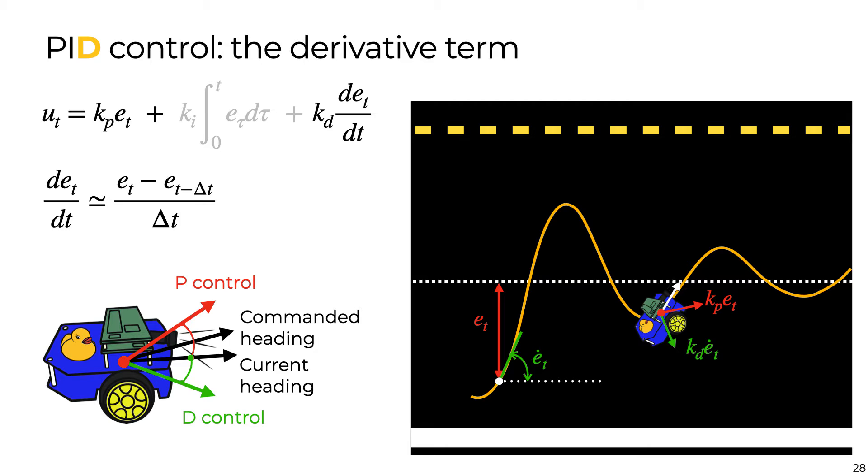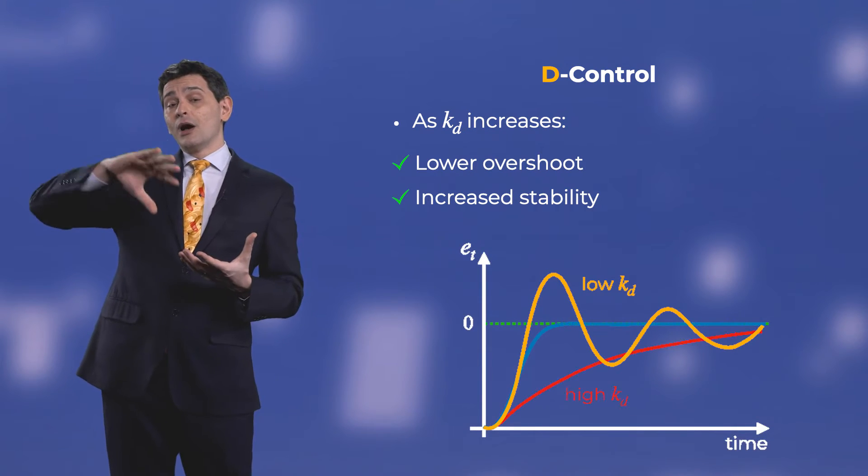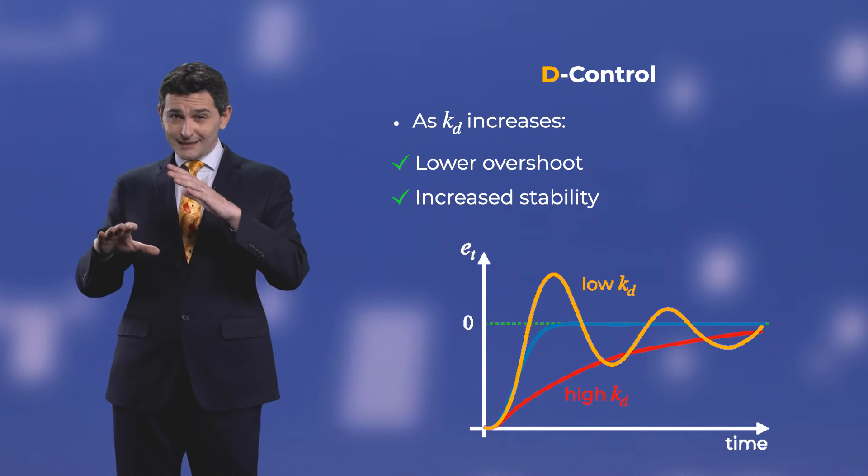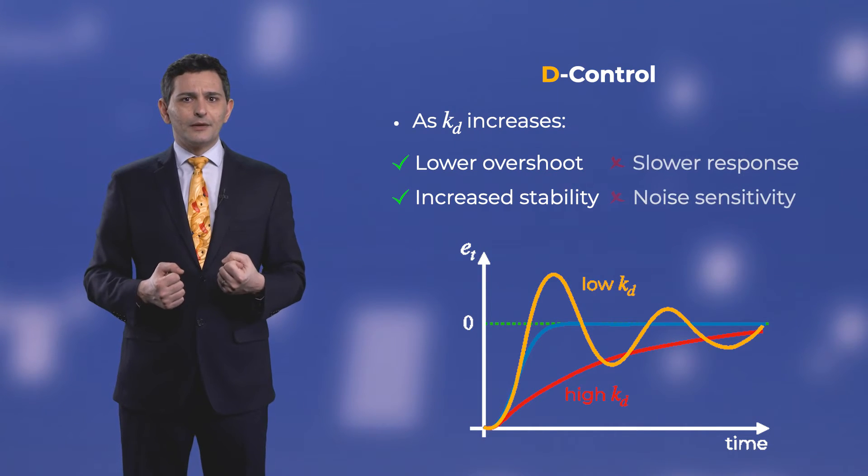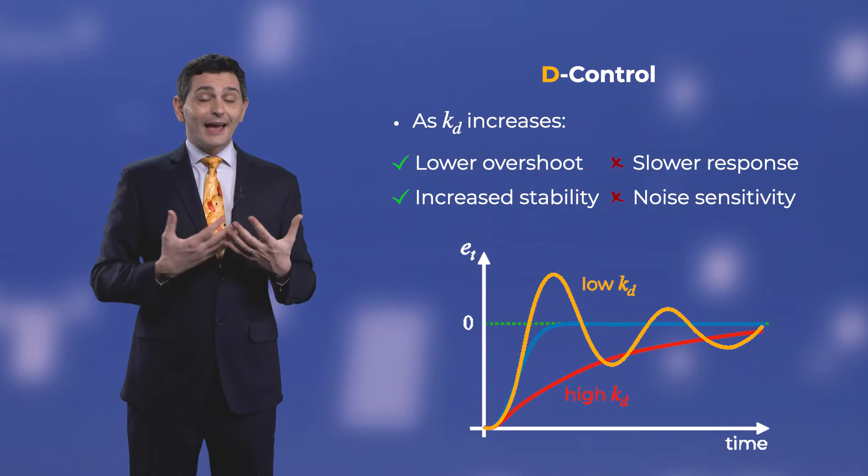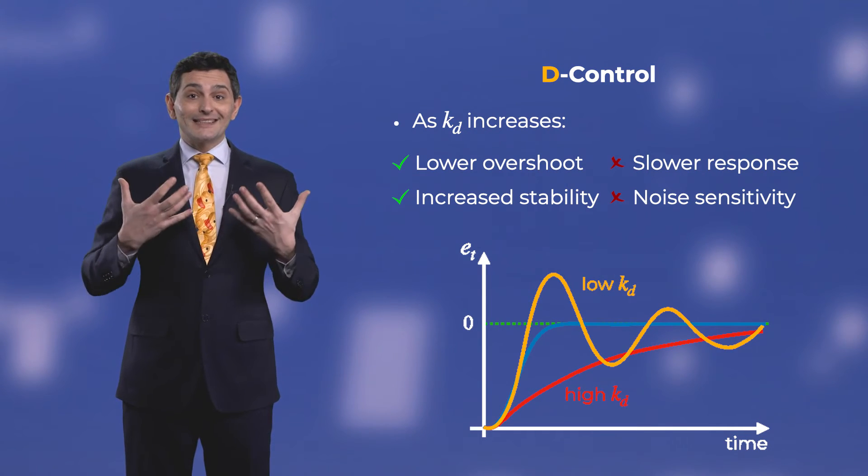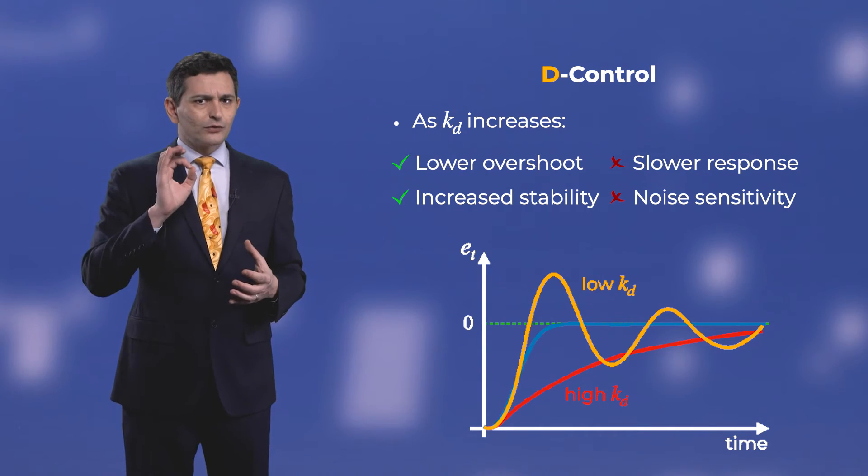The d-term is proportional to the rate of change, or the derivative of the error. It allows the robot to predict what the error will be in the near future. A derivative control action tries therefore to avoid the overshooting, hence damping the system, and increasing overall the stability. On the other hand, though, it slows down the system response, and unfortunately, it makes the system very sensitive to measurement noise, so it needs to be used with care.